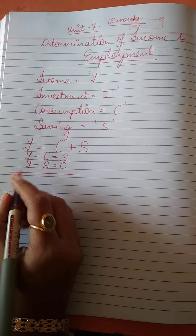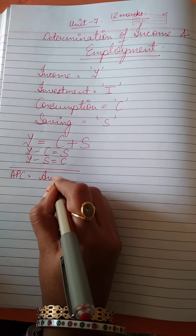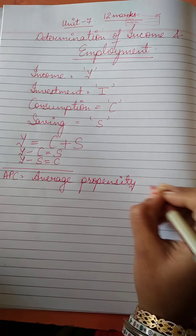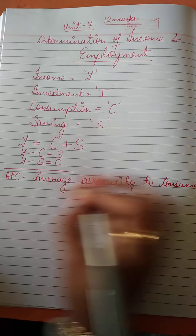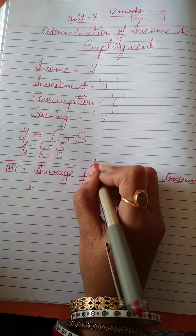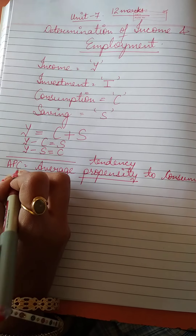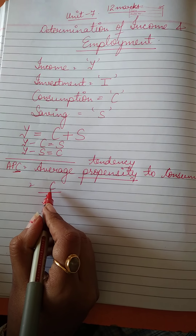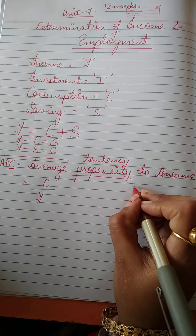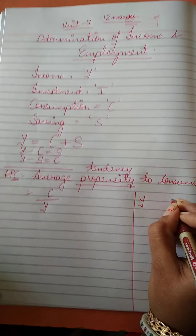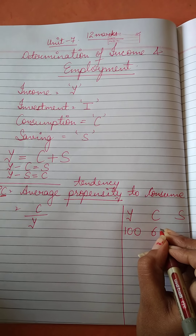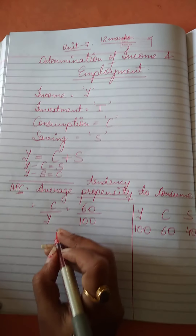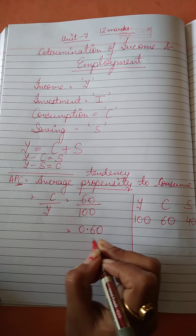APC stands for Average Propensity to Consume. Propensity means tendency. It tells us what part of income we are consuming. For example, out of one hundred, if sixty is consumed, then APC is 60 upon 100, which equals 0.60.